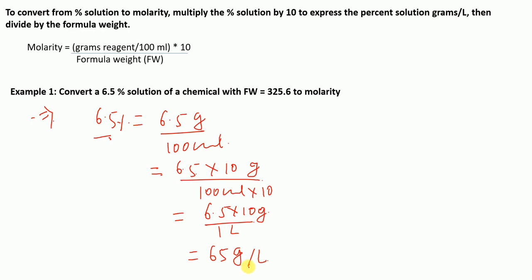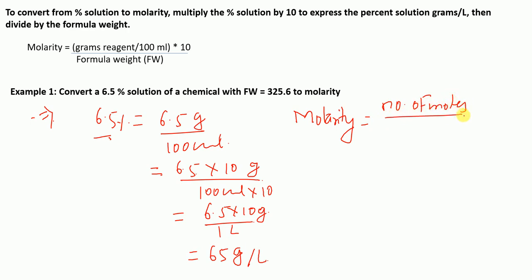We know that molarity is number of moles per liter. Number of moles is weight in grams divided by formula weight or molecular weight, which will then be divided by one liter.